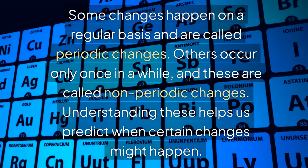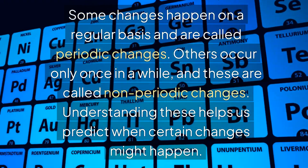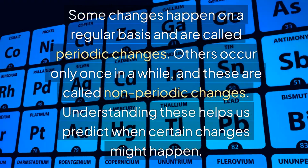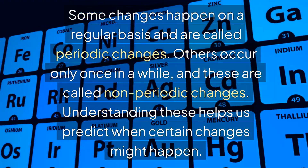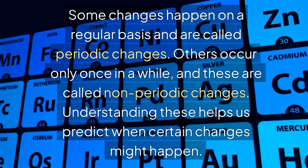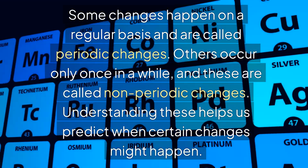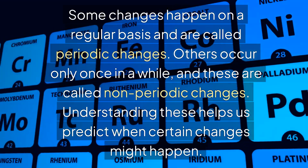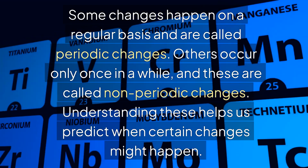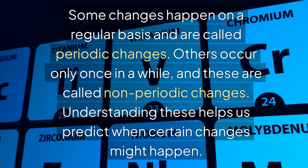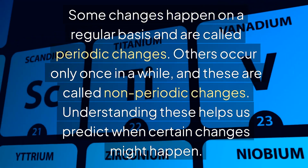Some changes happen on a regular basis and are called periodic changes. Others occur only once in a while, and these are called non-periodic changes. Understanding these helps us predict when certain changes might happen.